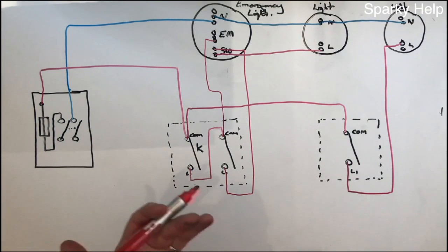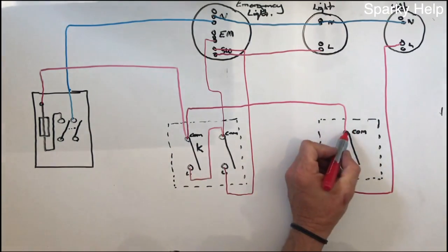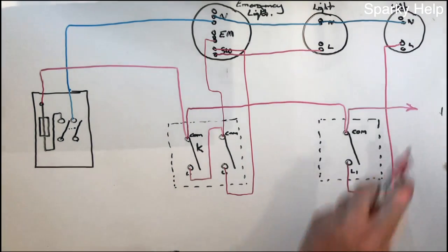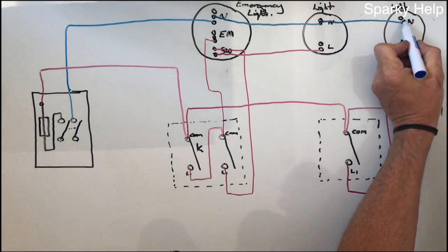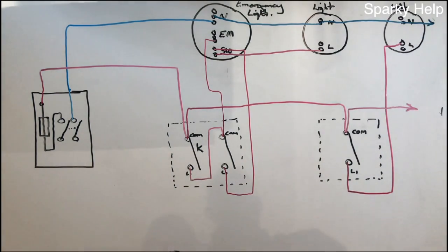Now if we want to take the feed to another room, then that will come out of this point here and the neutral, that point there.